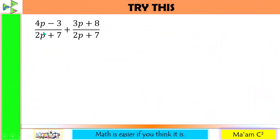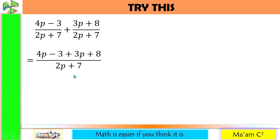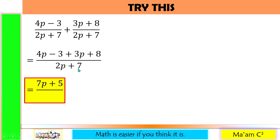Try this: we have (4p minus 3) over (2p + 7) plus (3p + 8) over (2p + 7). Let us add our numerators: (4p minus 3) plus (3p + 8), and copy the denominator. 4p plus 3p is 7p, and negative 3 plus 8 is positive 5. Copy the denominator. Is there anything more that we can cancel? Can we cancel p here? No, because we have an operation here.